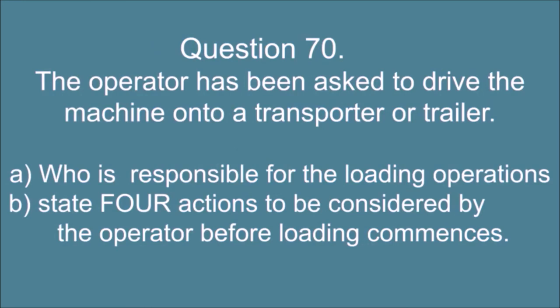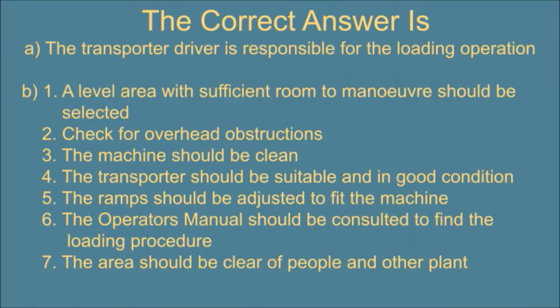Question 70. The operator has been asked to drive the machine onto a transporter or trailer. A. Who is responsible for the loading operations? And B. State 4 actions to be considered by the operator before loading commences. The correct answer is: A. The transporter driver is responsible for the loading operation. B. 1. A level area with sufficient room to manoeuvre should be selected, 2. Check for overhead obstructions, 3. The machine should be clean, 4. The transporter should be suitable and in good condition, 5. The ramps should be adjusted to fit the machine, 6. The operator's manual should be consulted to find the loading procedure, 7. The area should be clear of people and other plant.